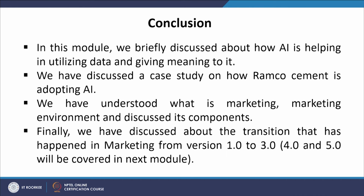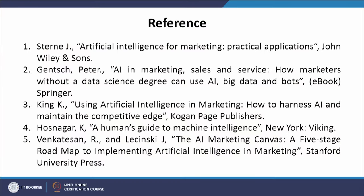To conclude, in this module we briefly discussed how AI is helping in utilizing data and giving meaning to it. We discussed a case study on how Ramco Cement is adopting AI. We understood what is marketing, the marketing environment, and its components. Finally, we discussed the transition in marketing from version 1 to 3, and versions 4 and 5 will be covered in the next module.